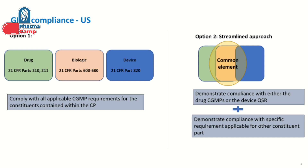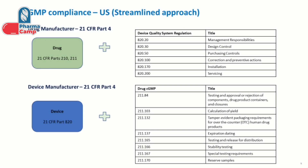Let's understand this with an example. If the primary mode of action of your product is drug, the manufacturer can choose to comply with the drug GMP requirements and in addition follow only the relevant parts of the device GMP. Similarly, if the primary mode of action is that of a device, the manufacturer can comply with the device GMP requirements mentioned in 21 CFR Part 820, and in addition follow only the relevant parts of the drug GMP. This makes the job much easier and streamlined — that's the purpose of this new approach.